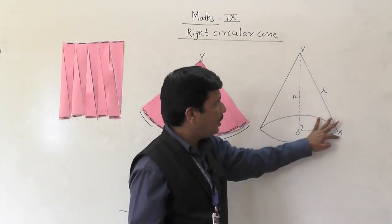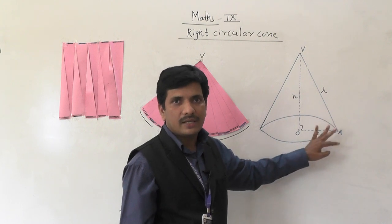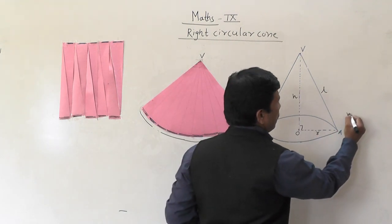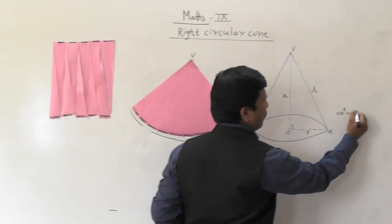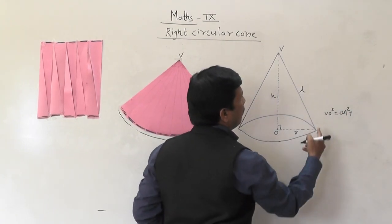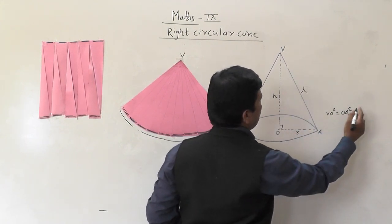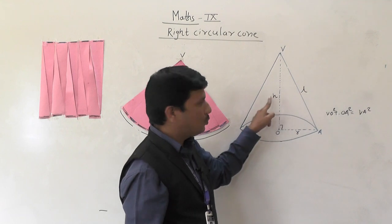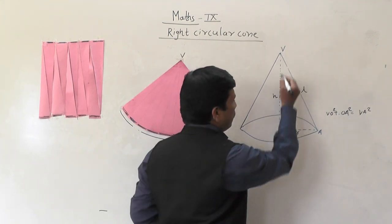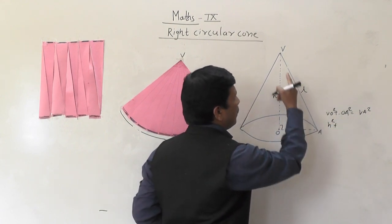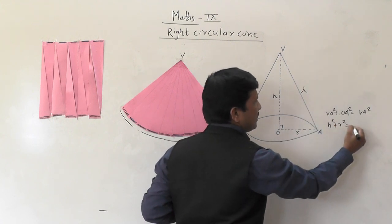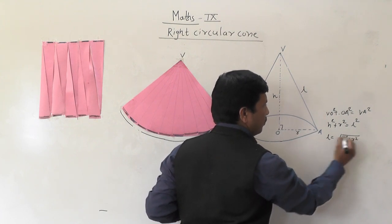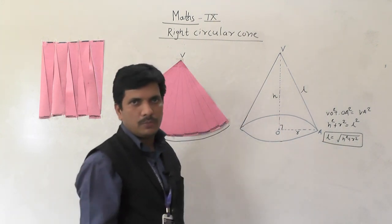Now if you observe here, VOA is a right angle triangle, so we can apply the Pythagoras property. We can say: h² + r² = l². Here VA is the hypotenuse, so l² = h² + r². So L we can find out from this: L is equal to the square root of h² + r².